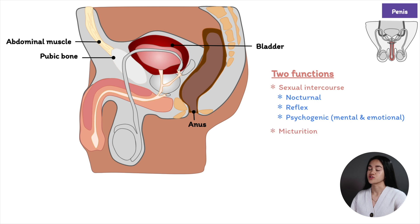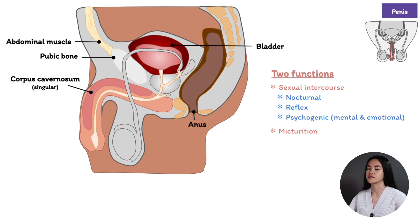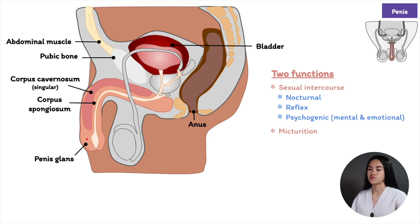The second function is micturition or urination, because the opening of the urethra is here, so the urethra carries urine from the bladder. The structure of the penis can be divided into three parts: the root, which is most proximal and can't be seen externally; the body, the free part between the root and glans, composed of three cylindrical compartments of erectile tissue. The two compartments running along the side of the penis are called corpora cavernosa, and the third compartment, called the corpus spongiosum, is below the corpora cavernosa. It surrounds the urethra and extends to form the tip of the penis and the glans, which contains the opening of the urethra. We'll cover this in more detail in the erection and ejaculation lecture.